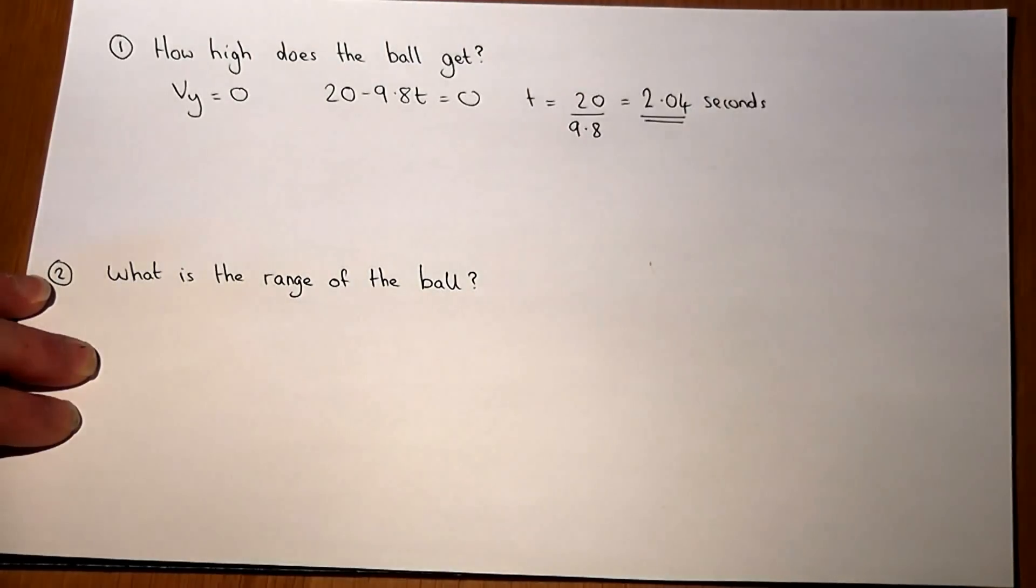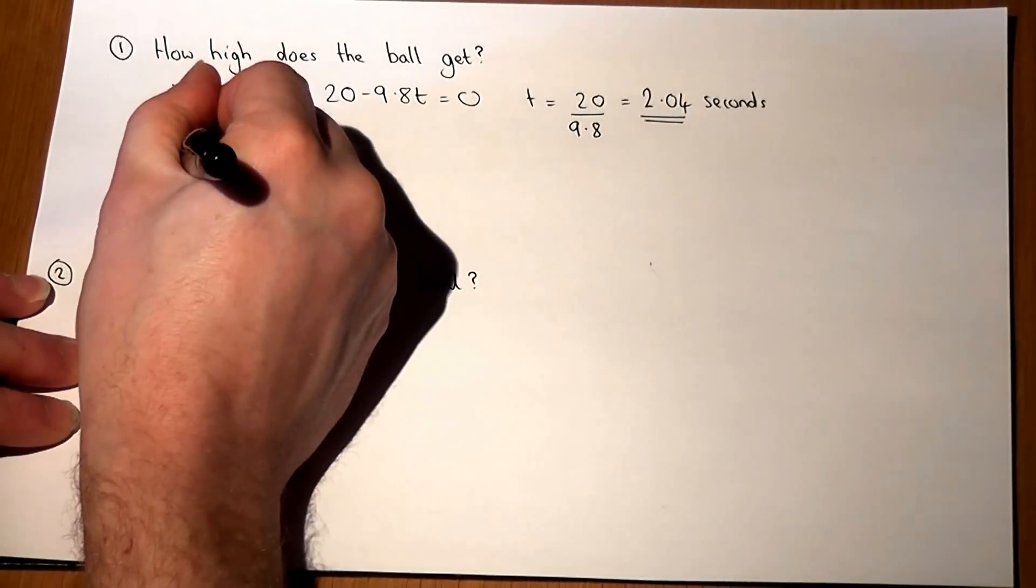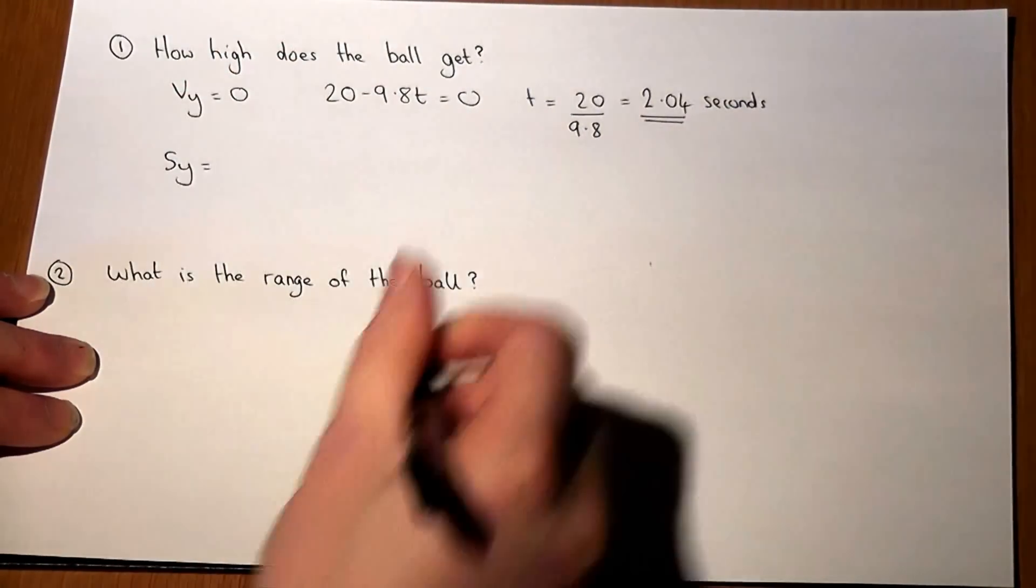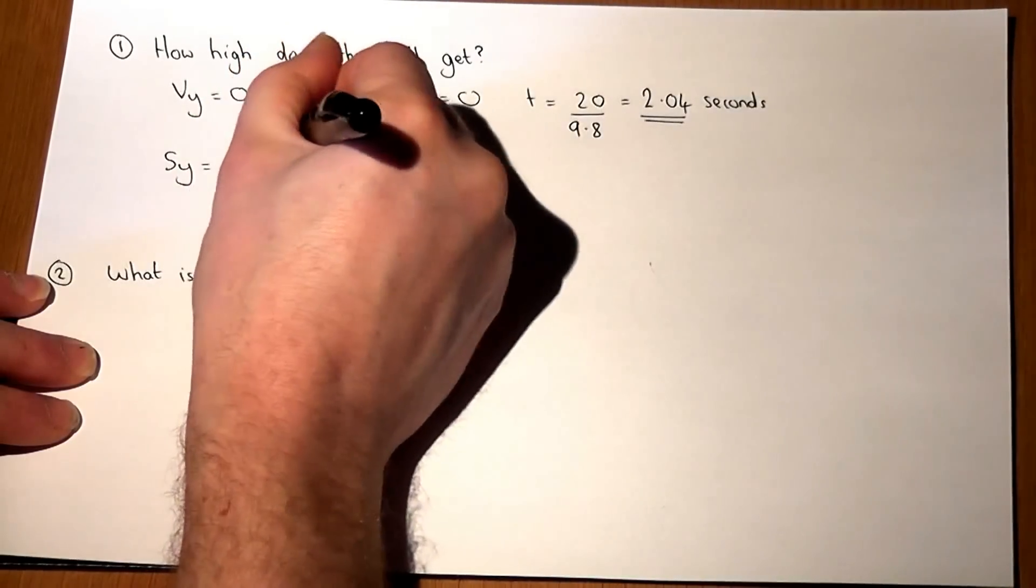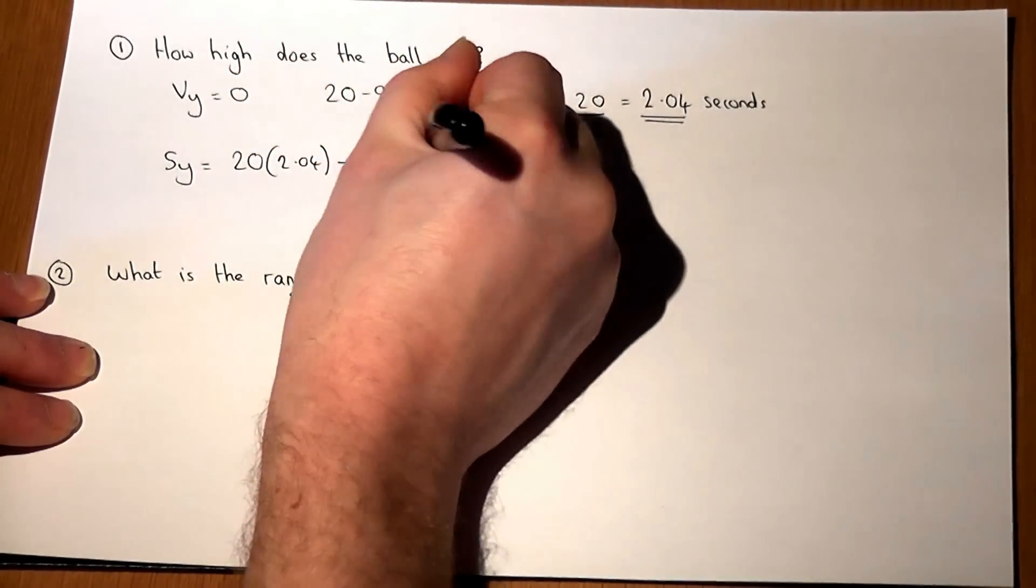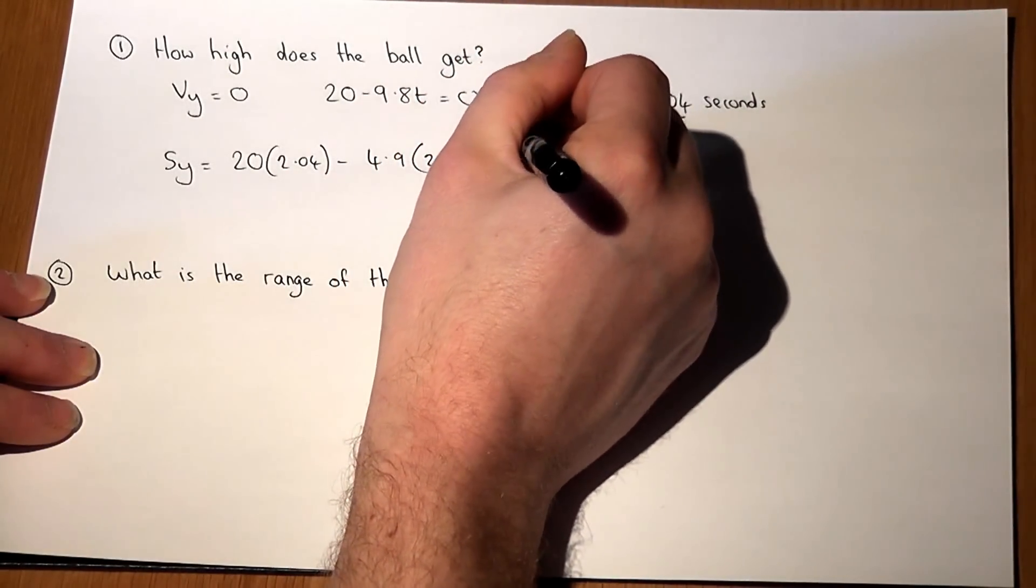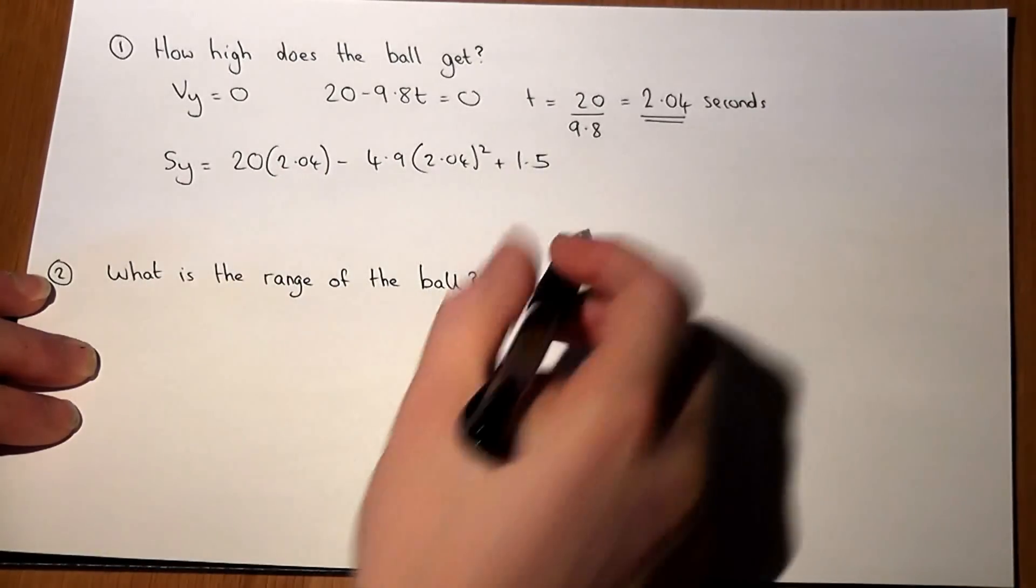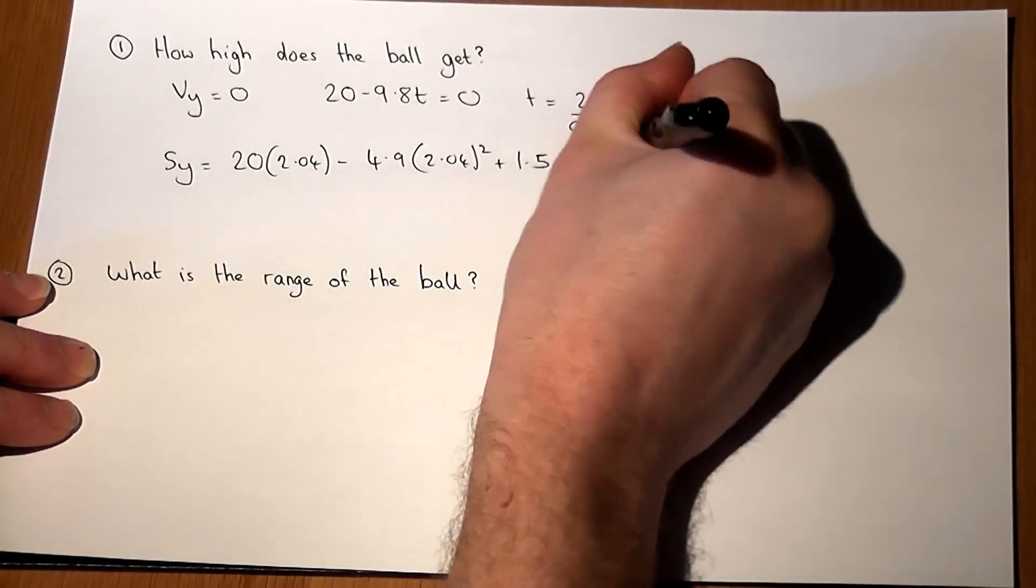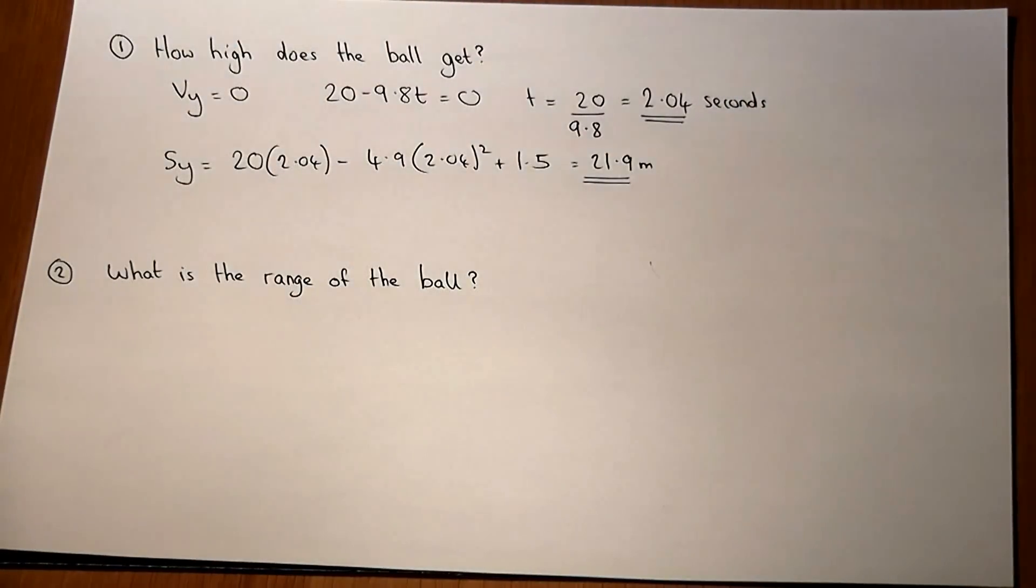So that's when the ball gets to the top. The question is, how high does it get? So the question is, what does s_y equal at that time? Well s_y was 20 lots of t minus 4.9 lots of t squared plus the initial position. And if you put that into a calculator, you get 21.9 metres. So the ball travels up by 21.9 metres.